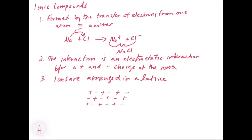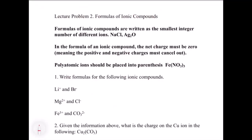Now let's take a look at how these things are grouped together in lecture problem two: how we write the formulas of ionic compounds. The formula of an ionic compound is written as the smallest integer number of different ions. For example, Na and Cl — there's one Na and one Cl, so we write NaCl. In silver oxide, there are two silvers for every oxygen, so we write Ag₂O.